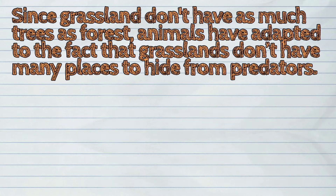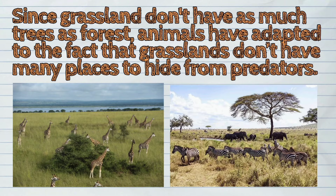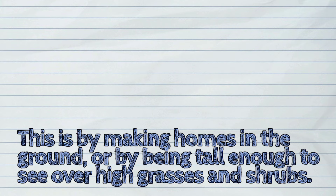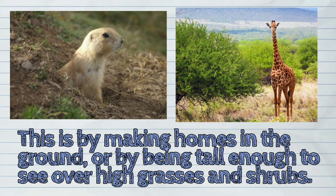Since grasslands don't have as many trees as forests, animals have adapted to the fact that grasslands don't have many places to hide from predators. This is by making homes in the ground, or by being tall enough to see over high grasses and shrubs.